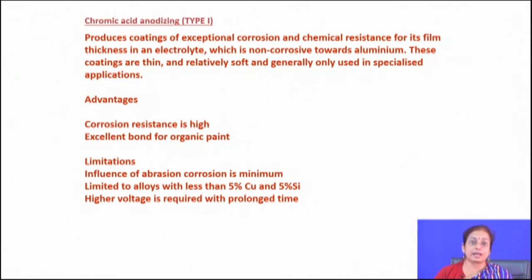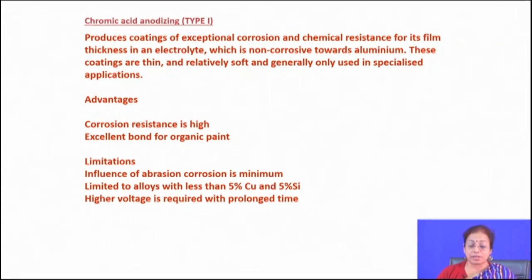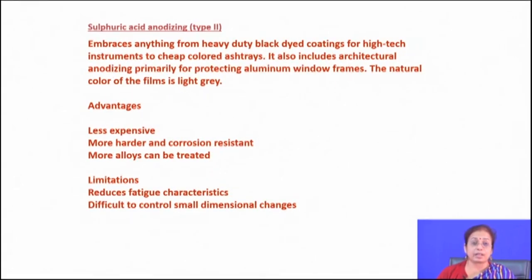Anodizing can be done in two different solutions: chromic acid solution and sulfuric acid solution. Chromic acid produces coatings with exceptional corrosion resistance and chemical resistance. However, the abrasion resistance is minimum, so chromic acid anodizing cannot be used for wear resistance purposes. One important limitation of anodizing is that if it is an aluminum-based alloy or magnesium-based alloy, the kinetics of anodizing are very poor. Usually anodizing is applied on pure metallic materials; whenever it is an alloy system it is very difficult to carry out the anodizing process.